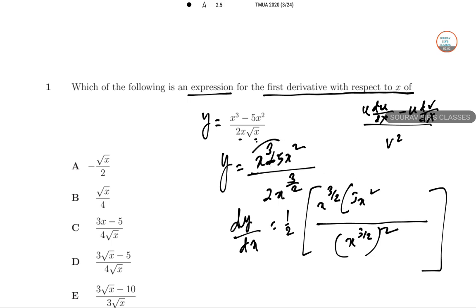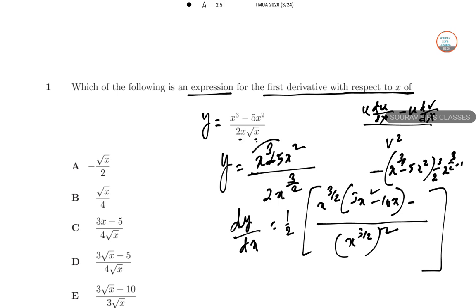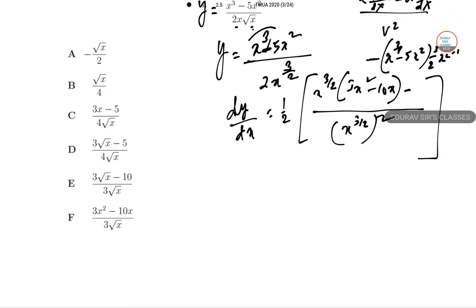The derivative of the numerator: X cubed gives 3X squared, and minus 5X squared gives minus 10X. Then in the second part, X to the power 3/2 is the denominator term. The numerator remains unchanged: X cubed minus 5X squared. The derivative of X to the power 3/2 is 3/2 times X to the power 3/2 minus 1.